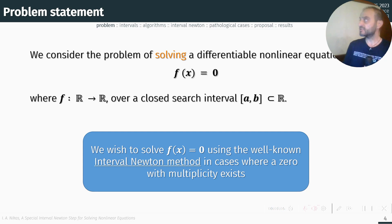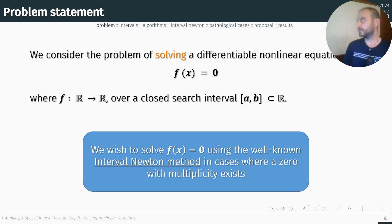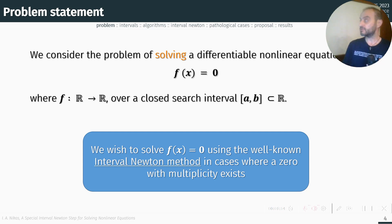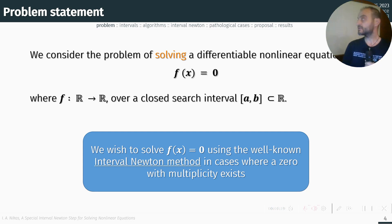In this work we consider the problem of solving a differentiable non-linear equation over a closed search interval. Specifically, we wish to solve this equation using the well-known interval Newton method in cases where a zero with multiplicity exists.